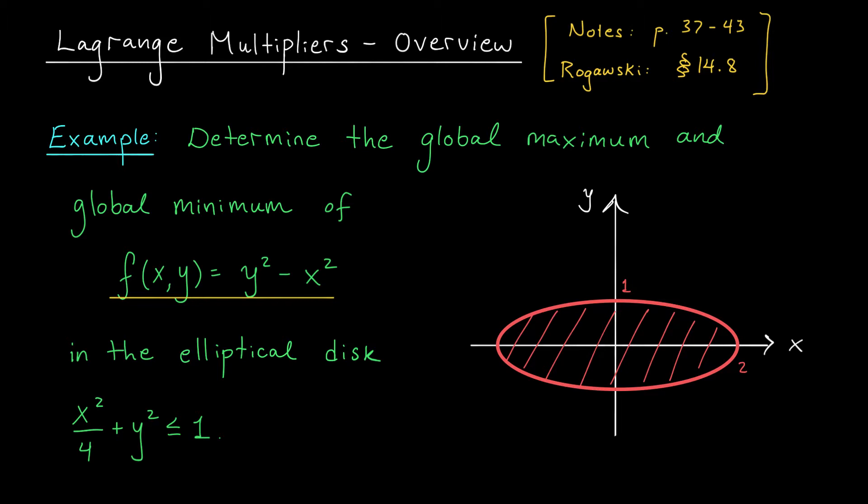So to motivate our discussion, I'd like to consider the following example, which we're actually going to solve in the next video. Here, we're looking for the global max and min of the function f(x,y) equals y squared minus x squared, and we're doing this over the elliptical disk shown here. This disk can be described by the inequality x squared over 4 plus y squared is less than or equal to 1.